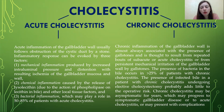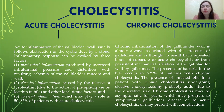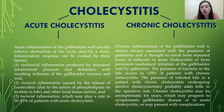Chronic cholecystitis: chronic inflammation of the gallbladder wall is almost always associated with the presence of gallstones and is thought to result from repeated bouts of subacute or acute cholecystitis, or from persistent mechanical irritation of the gallbladder wall by gallstones. Bacteria in the bile occur in more than 25% of patients with chronic cholecystitis. Chronic cholecystitis may be asymptomatic for years, may progress to symptomatic gallbladder disease or to acute cholecystitis, or may present with complications.